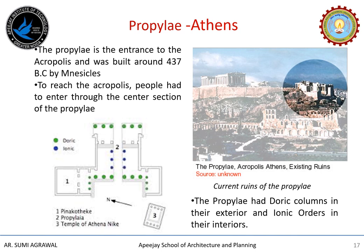The Propylai is the entrance to the Acropolis, built around 437 BC. To reach the Acropolis, people had to enter through the center section of the Propylai, and the two wings on either side were never finished. The columns on the outside of the Propylai were Doric, whereas the interior columns were Ionic — if the Doric order were used in the interior, the height of the roof would make its diameter very large, so the designers used the slender Ionic column inside. Inside the Propylai was a large library and picture gallery. In times of peace the gates were usually left wide open, but when an enemy threatened, the wooden doors were closed and there was no other access to the Acropolis.